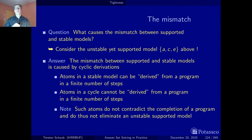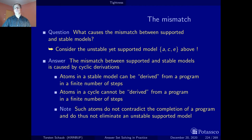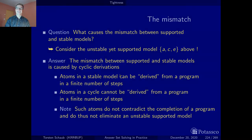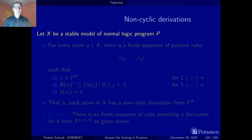We will see later — not in this section but the next one — that we can add formulas such that once a cyclic derivation is happening, the current interpretation is eliminated and will not result in a model. But first, I've been putting 'derived' in quotes a couple of times. Let's make clear what I mean with a non-cyclic derivation. Here is the definition of a non-cyclic derivation, already wrapped in a property of atoms belonging to a stable model.